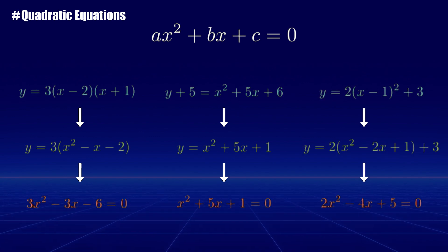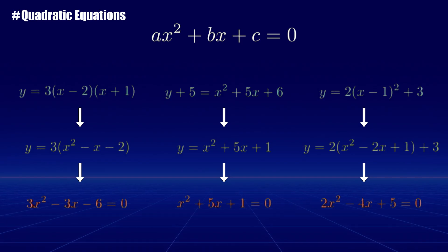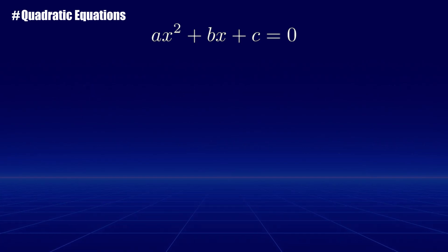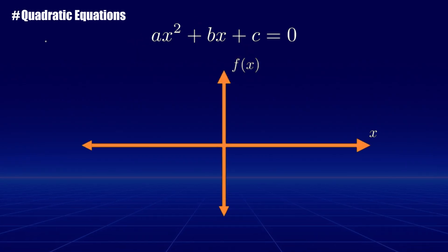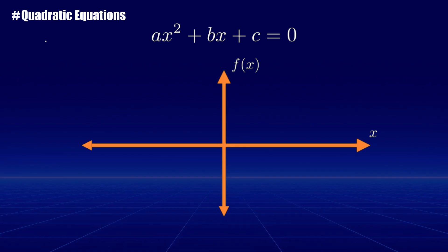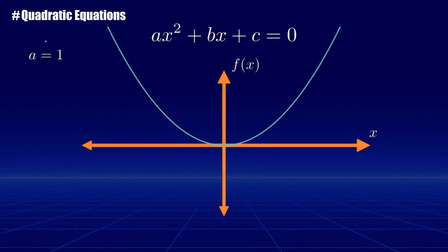Quadratic equations have some key features represented by their coefficients. The coefficients are the numbers in front of each term in the equation. a is the coefficient of x squared. It determines the parabola direction and its width. A positive a value means it opens upwards like a smile, while negative a makes it frown.